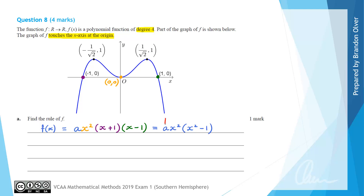Next we need to work out what this dilation factor a is, and to do that we're going to use one of the additional coordinates included on the graph, which turn out to be the stationary points. So we're going to substitute that point into the rule. We'll substitute in x = 1 over root 2, using the slightly simplified rule written last.